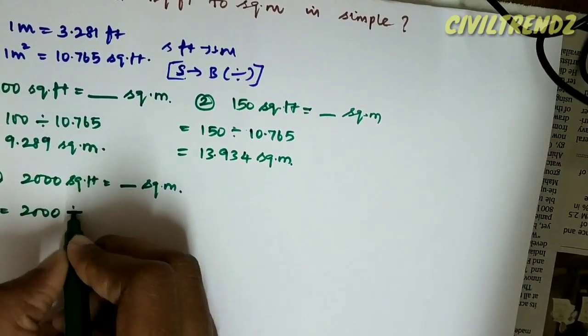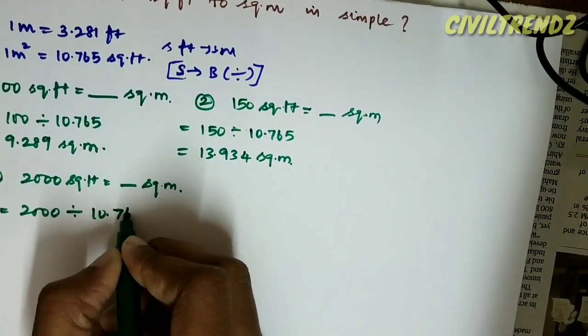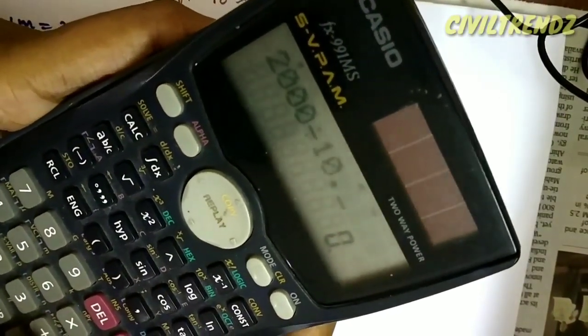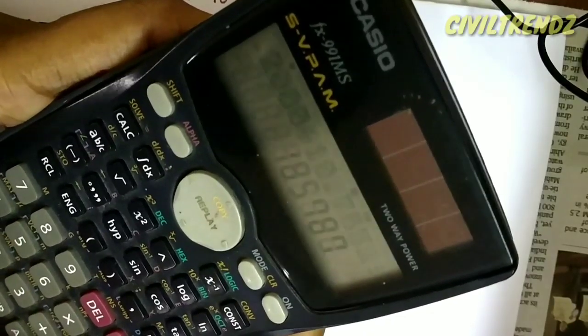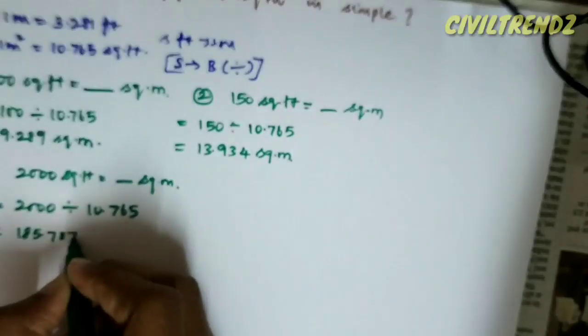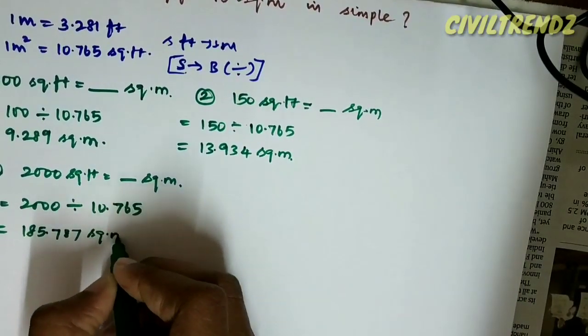Third problem: 2000 square feet. 2000 divided by 10.765 equals 185.747 square meter. The conversion factor is 1 meter square equals 10.765 square feet.